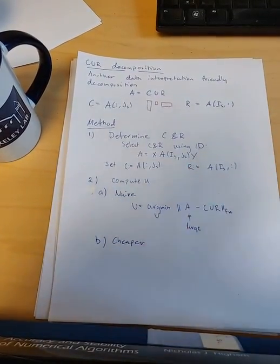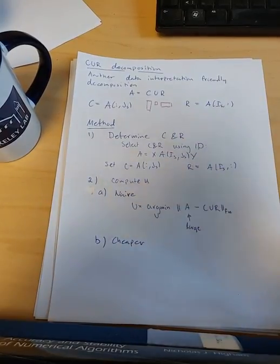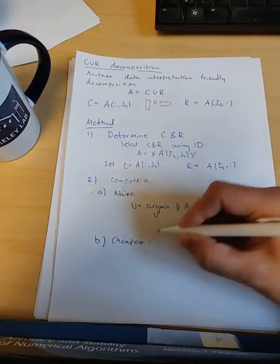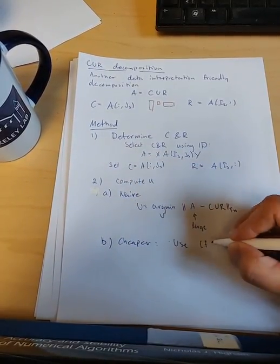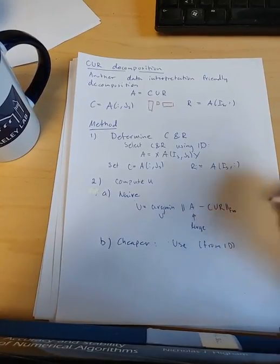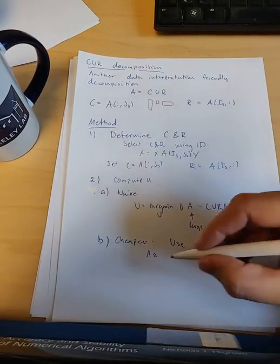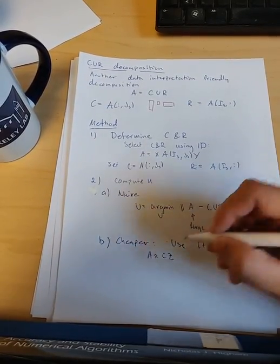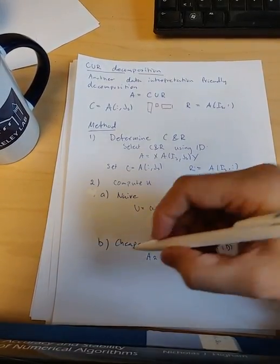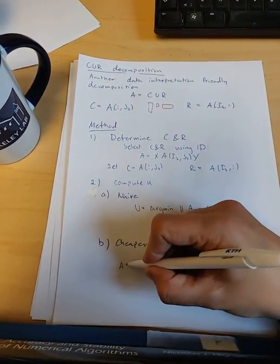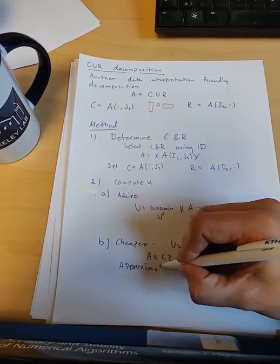So there's another way to compute U, which is based on the way we compute the C and R. Remember that from the fact that the double-sided ID is computed from the standard ID, we have that A is approximately equal to CZ for some Z matrix. So that's the first step in the computation of the double-sided ID.